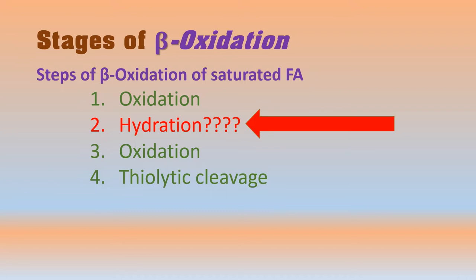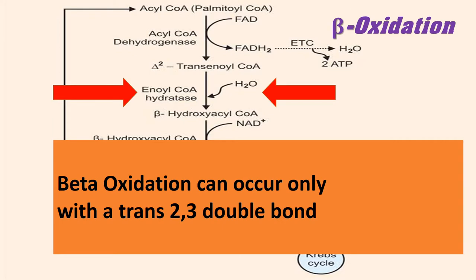Enoyl-CoA hydratase is the enzyme that catalyzes the addition of water to fatty acyl-CoA — this is the second step, known as hydration. In the previous lecture, we discussed palmitoyl-CoA and its conversion into trans-enoyl-CoA in the first step, acted upon by acyl-CoA dehydrogenase. Enoyl-CoA hydratase then causes hydration of this trans-enoyl-CoA, converting it into beta-hydroxy acyl-CoA.